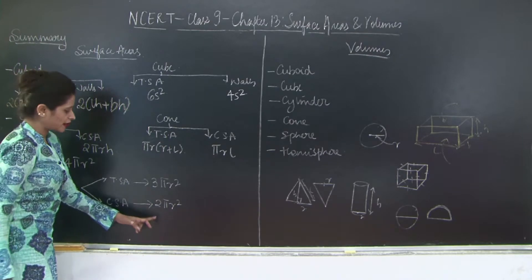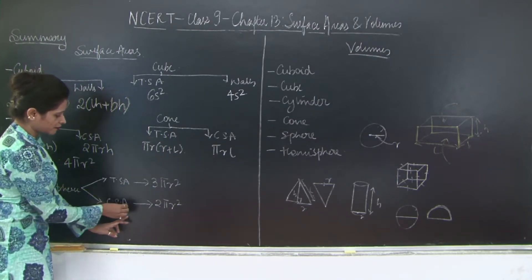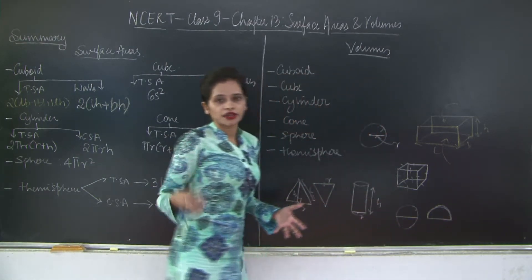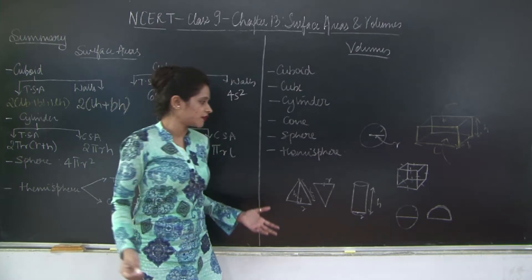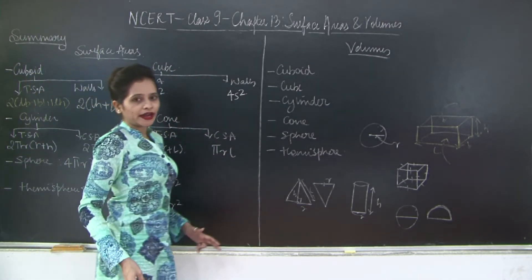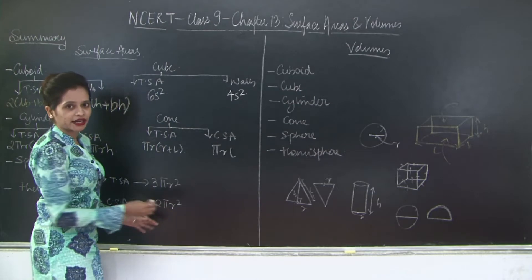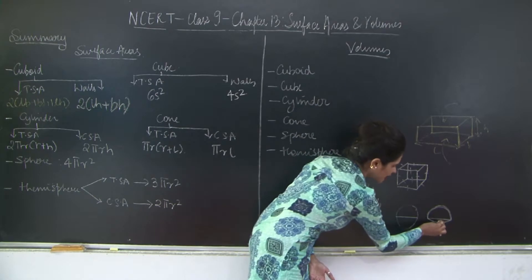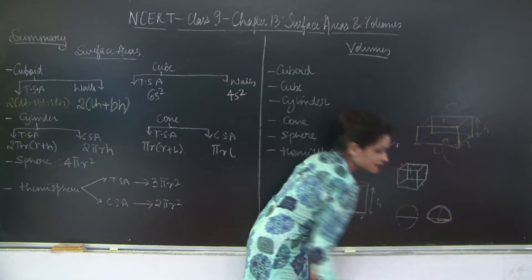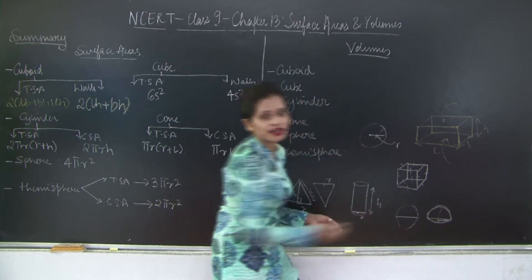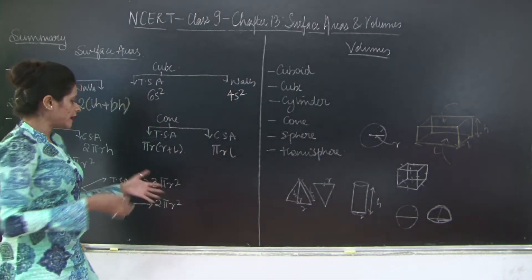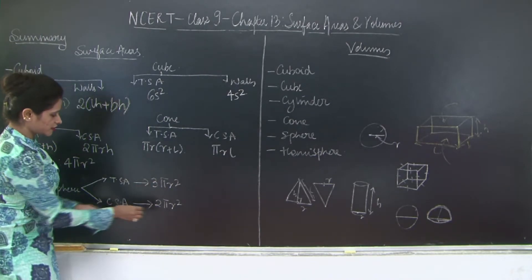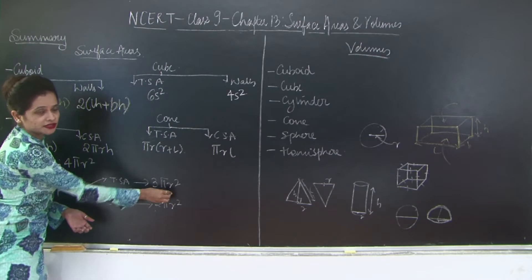To understand why the total surface area of a hemisphere is 3πR²: the curved surface area is half of the sphere's total surface area, which gives 2πR². Then we add the area of the circular base, which has the same radius R, giving πR². So 2πR² + πR² = 3πR². The curved surface area of a hemisphere is 2πR² and the total surface area is 3πR².